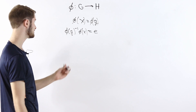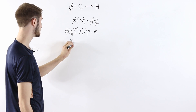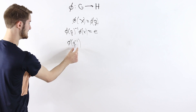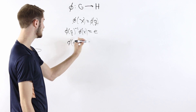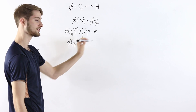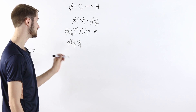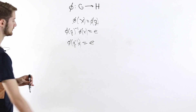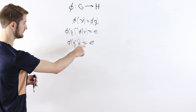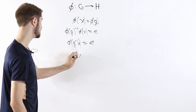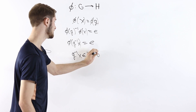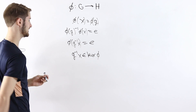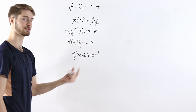Because phi is a homomorphism, phi of g inverse is the same as phi of g inverse — we can move the negative one from the outside of phi to the inside. So we have phi of g inverse times phi of x, and since phi is a homomorphism, that's the same as phi of g inverse times x. So phi of g inverse x equals the identity of the group H, which is exactly the same as saying that g inverse x is in the kernel of phi, since by definition the kernel is the set of all elements that phi maps to the identity.